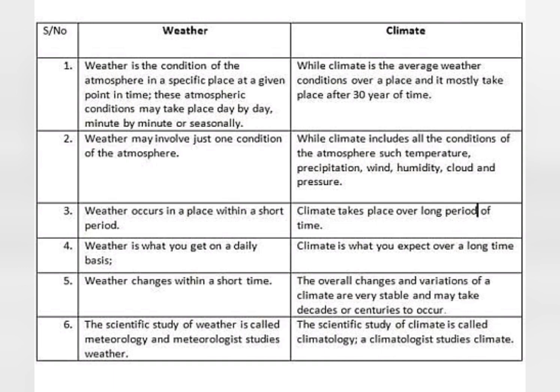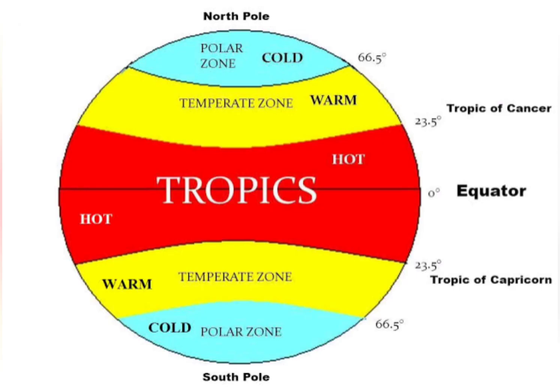Now we move on to the climatic zones. This red zone is the torrid zone. It remains always hot as it receives direct sun rays.